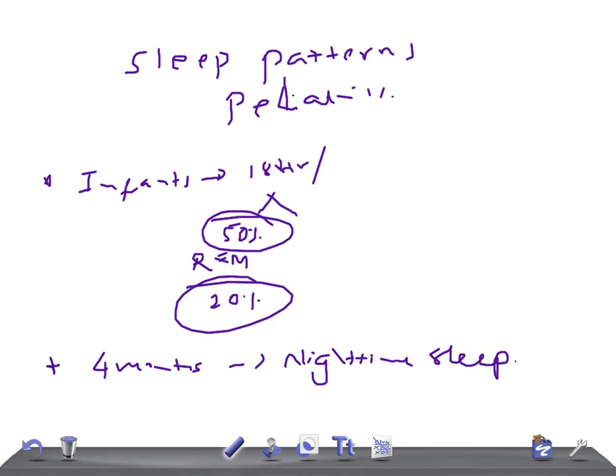Around the age of three years, sleep disorders begin that are known as parasomnias.